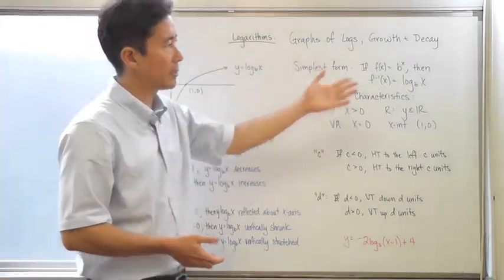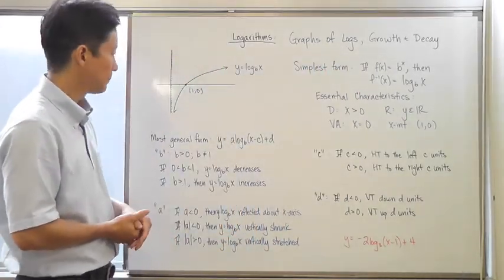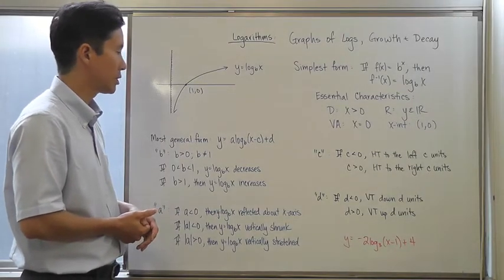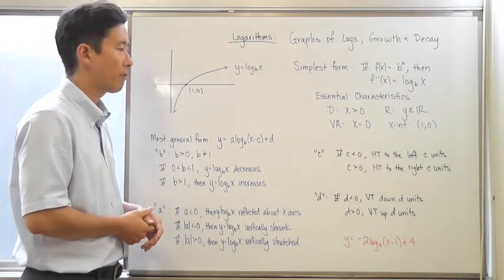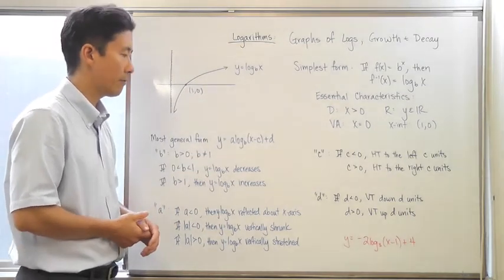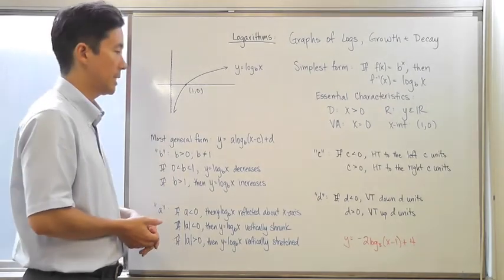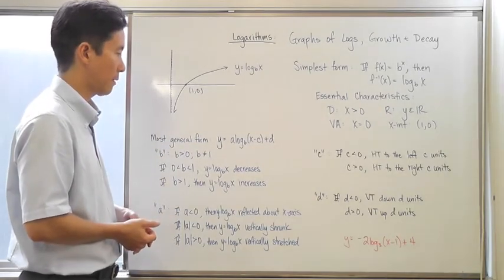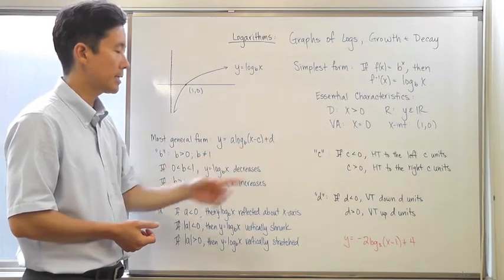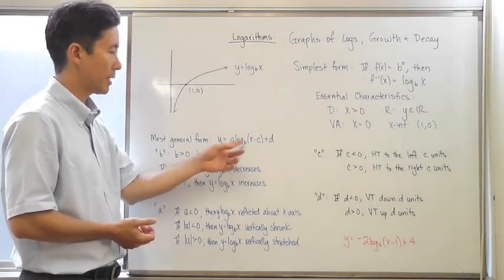The simplest form is not always going to be the form you encounter. You'll more often see the most general form, or at least some form of it. Here is the most general form: y is equal to a log base b of x minus c plus d. Notice that we have the parameters a, b, c, and d, and the variables are going to be x and y.